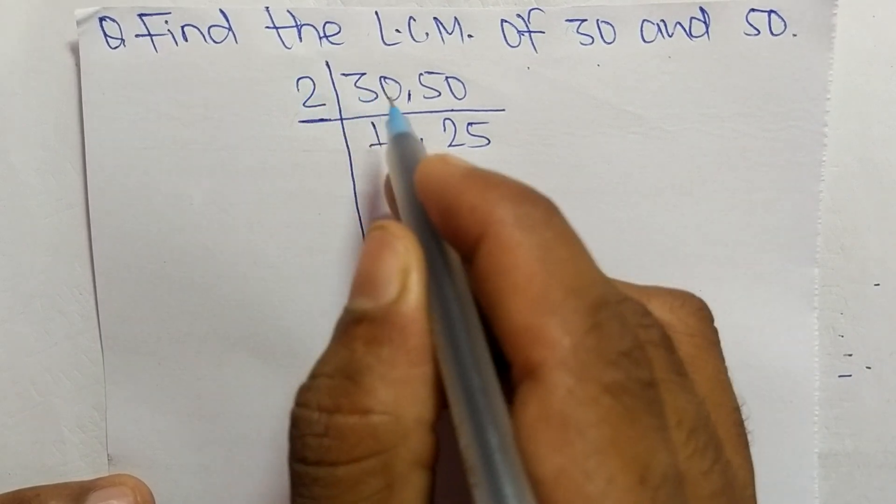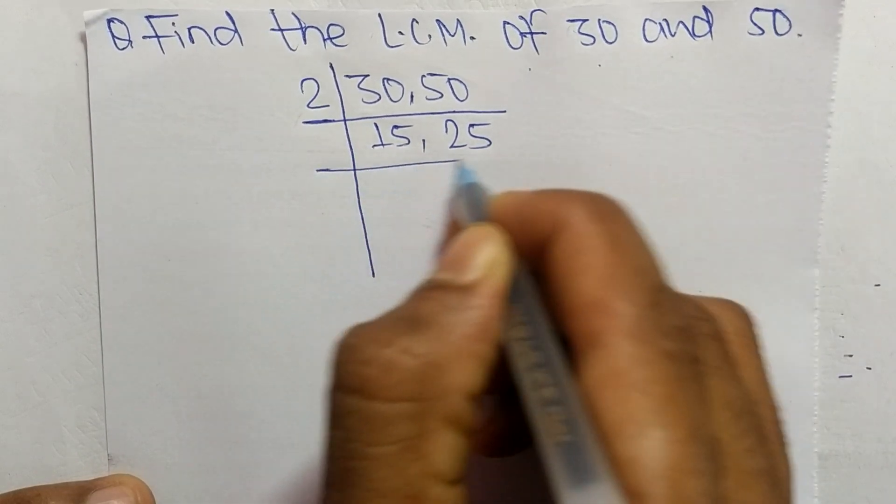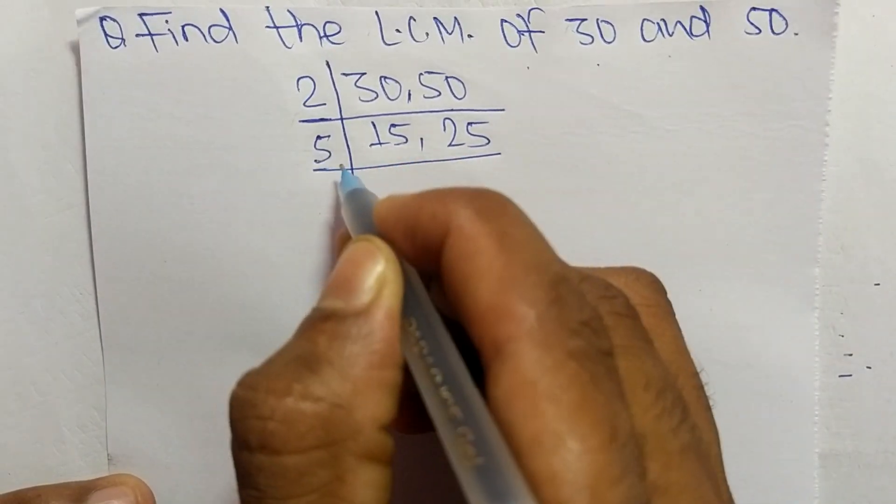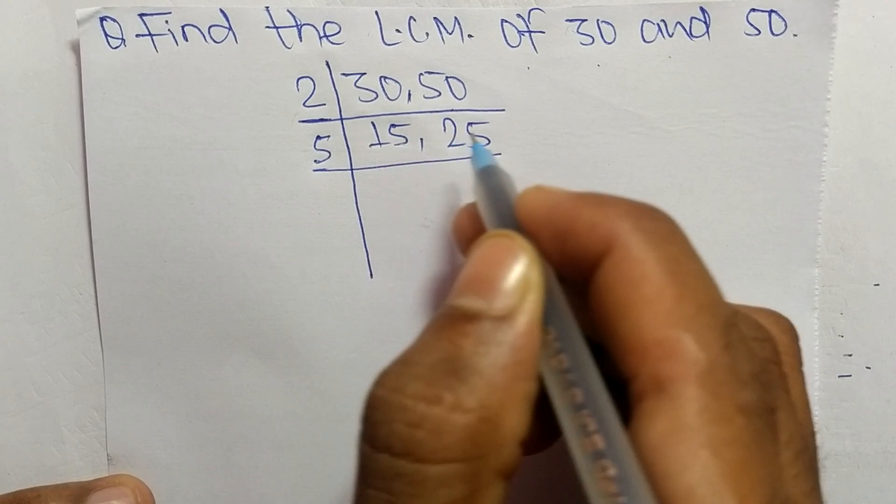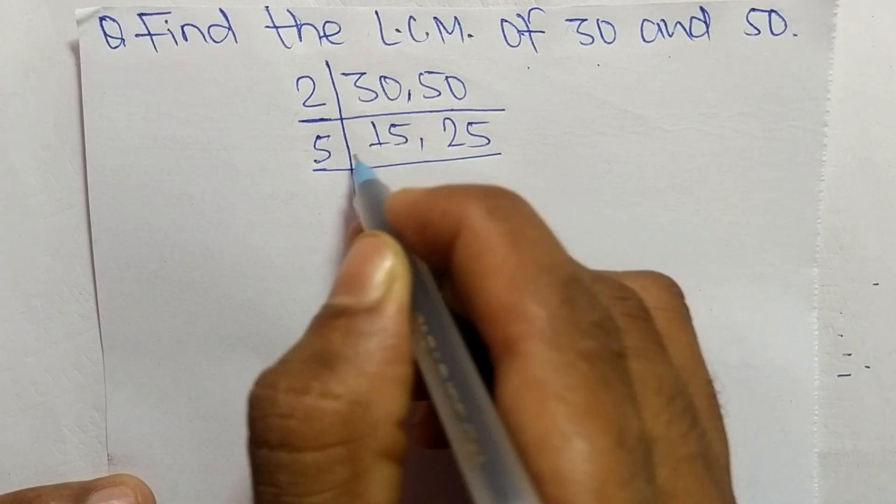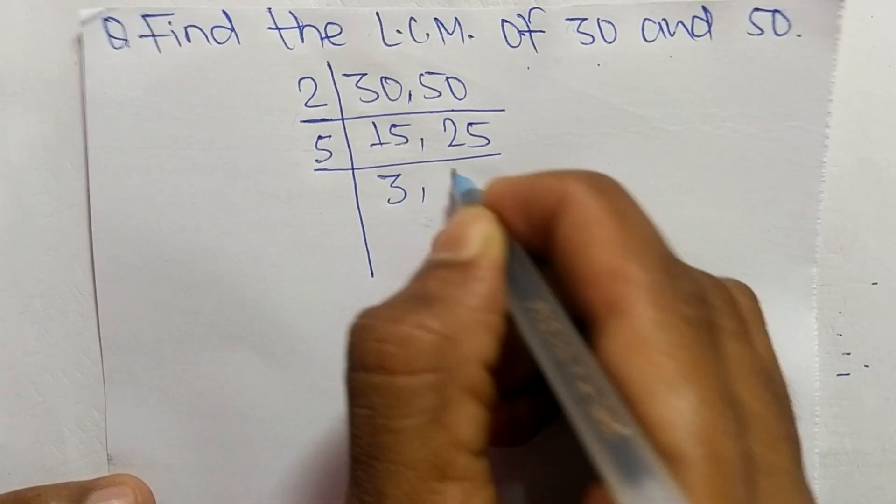So now we choose the number greater than 2 that can divide 15 and 25. So the number is 5. 3 can divide 15 but can't exactly divide 25, so we choose 5. 5 times 3 equals 15 and 5 times 5 equals 25.